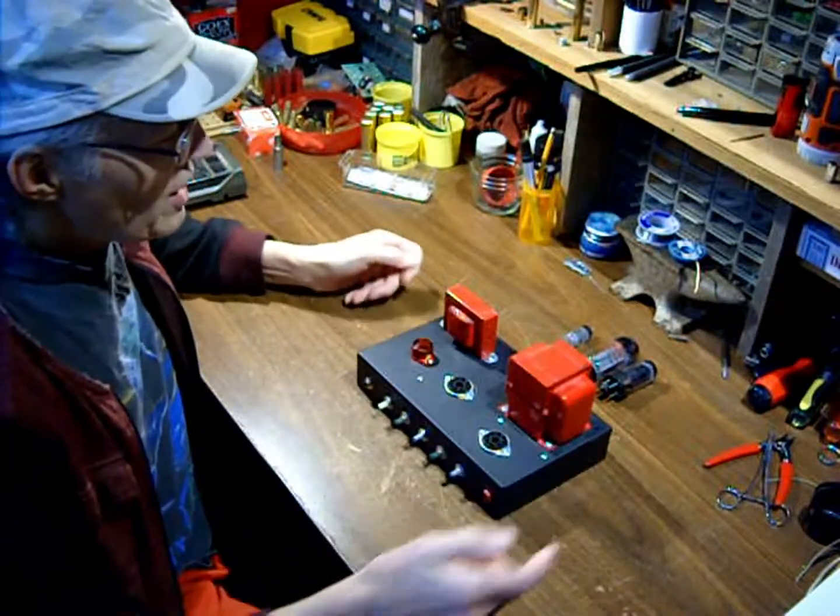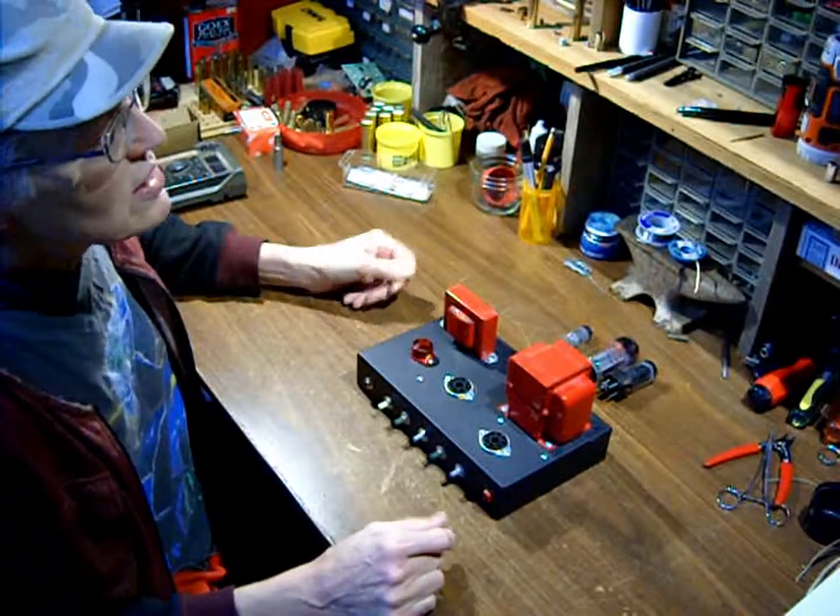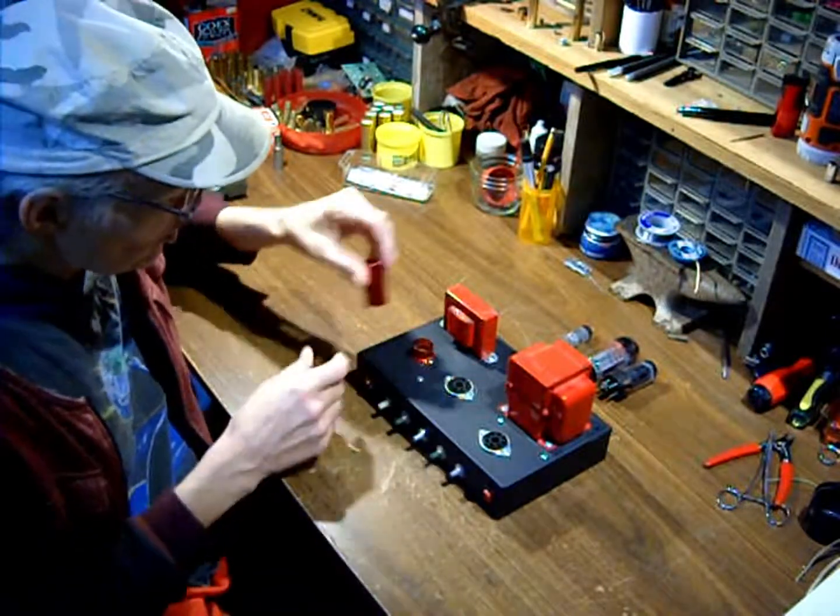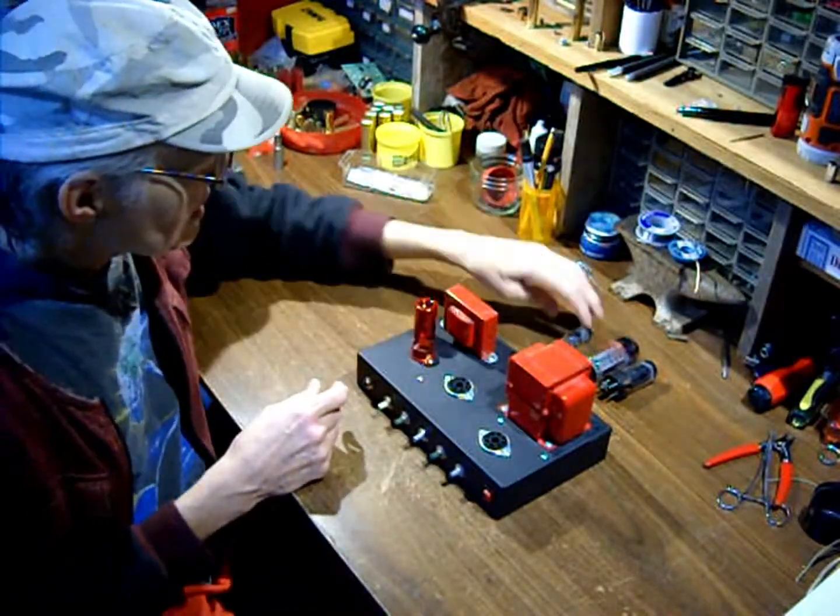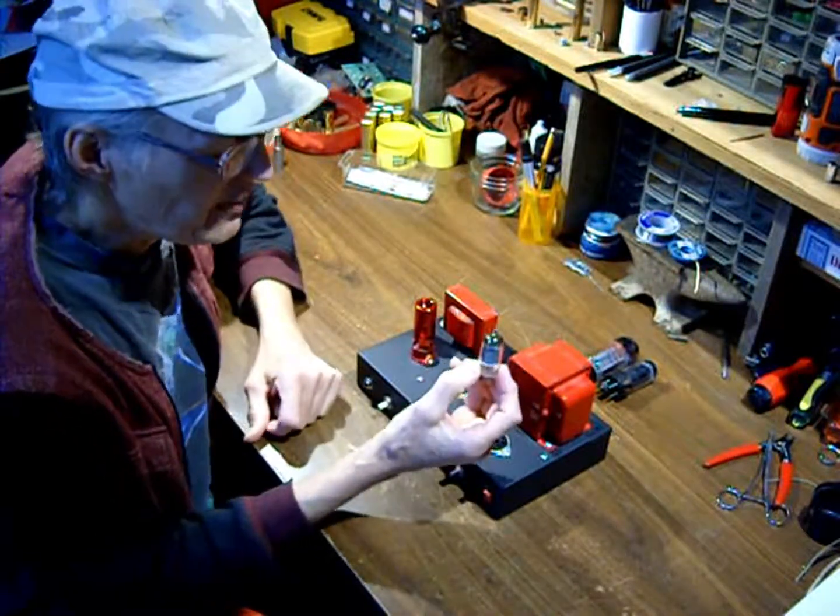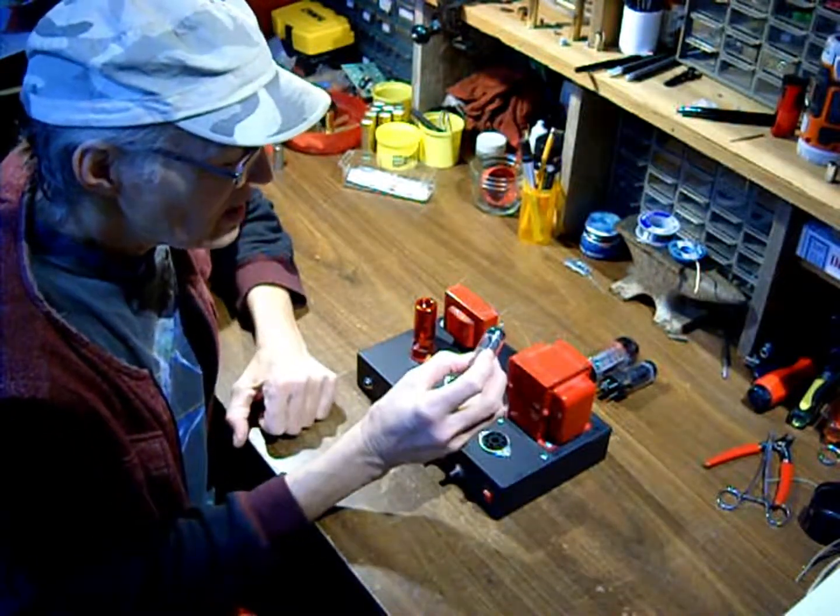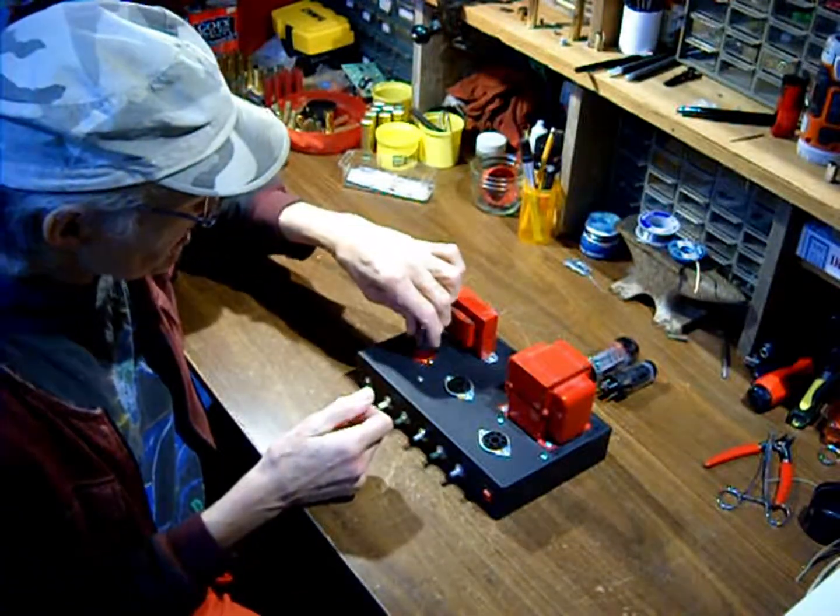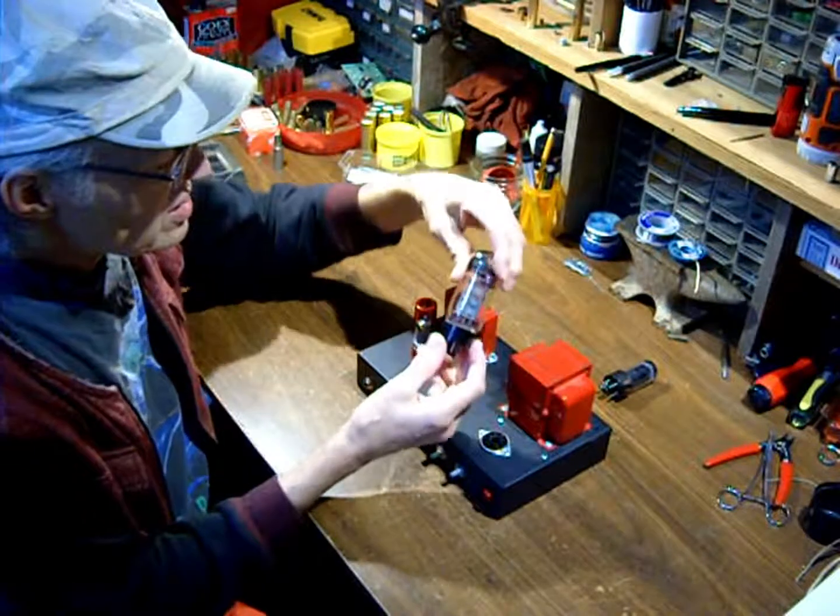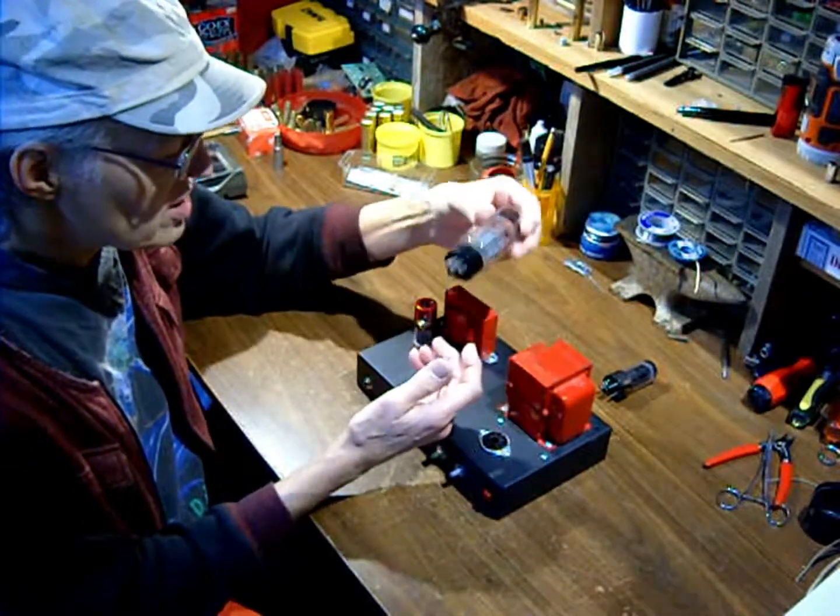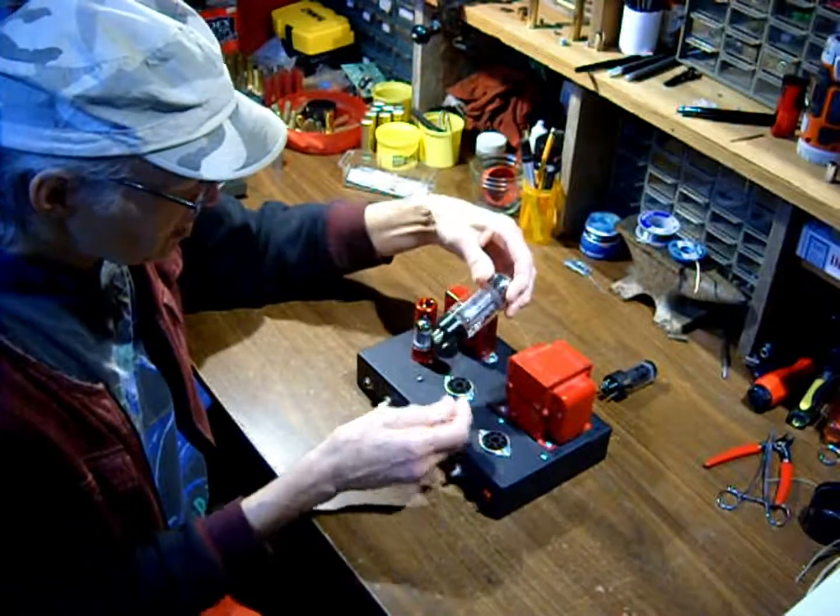This is the top and here's the tube cover. It goes over here. This is a 12AX7 7025 tube that goes in the preamp slot here. This is a 6L6GC. This is the power tube. It goes in this one.